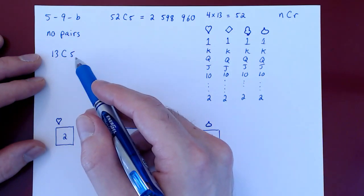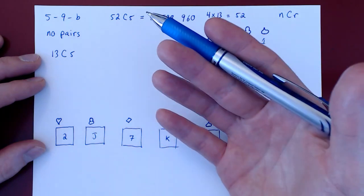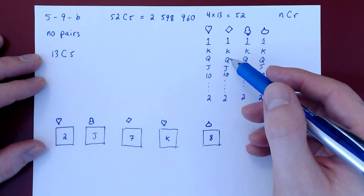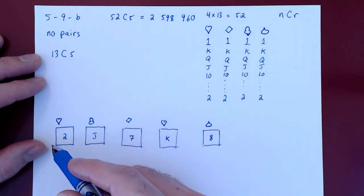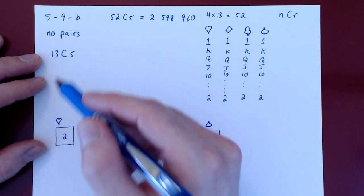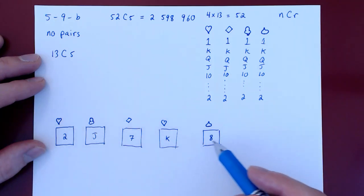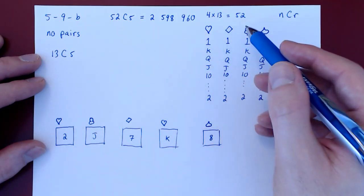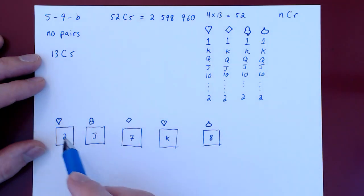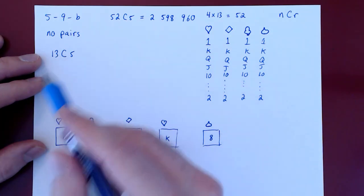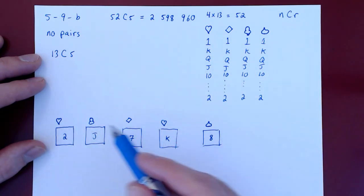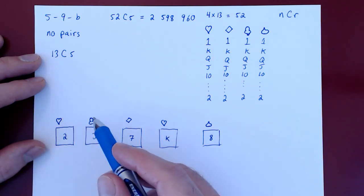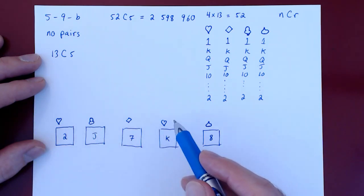So now we've chosen. It's also, of course, without replacement. Once a card is dealt from the deck, it can't be chosen again. So there are 13 choose 5 ways of obtaining five cards of a different kind. But that's not all. All we have now are the kinds. We've chosen the five kinds: a two, jack, seven, king, and eight. But what is the suit for each of the five cards?